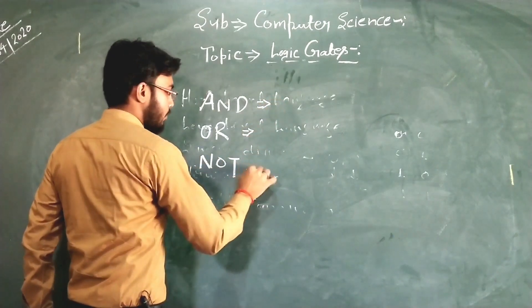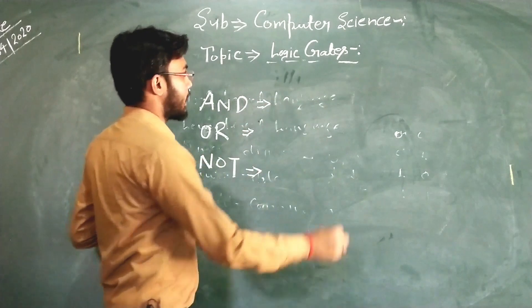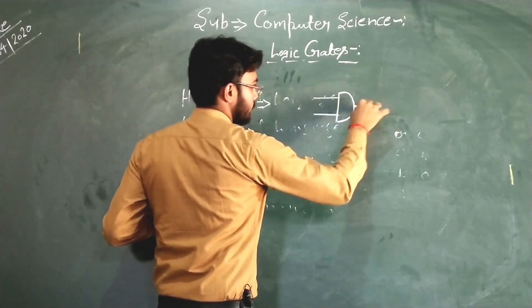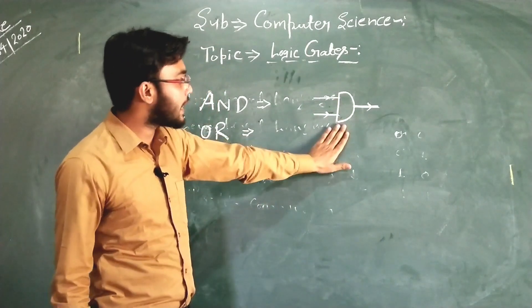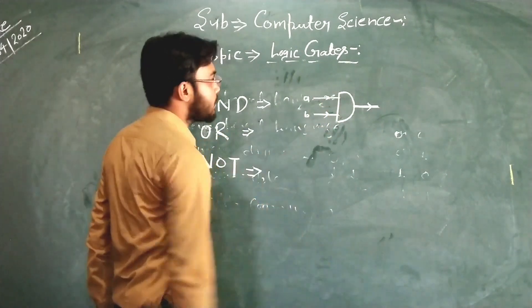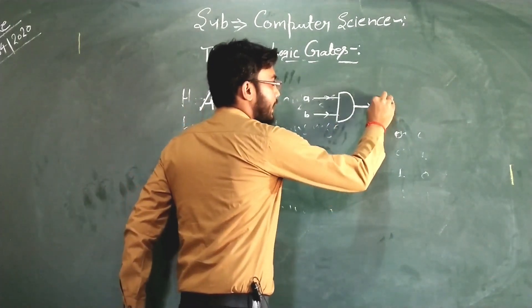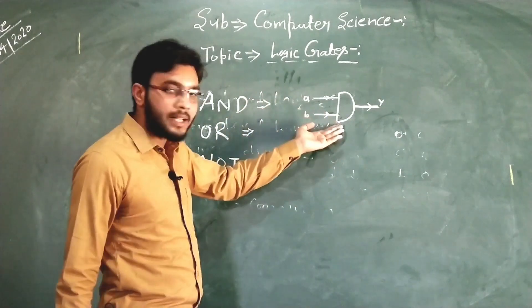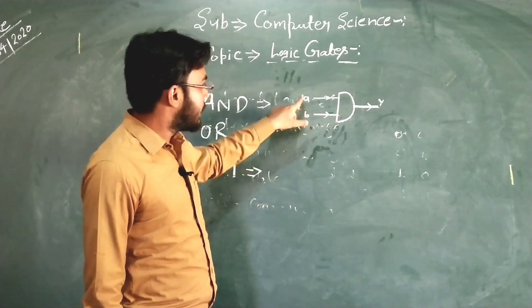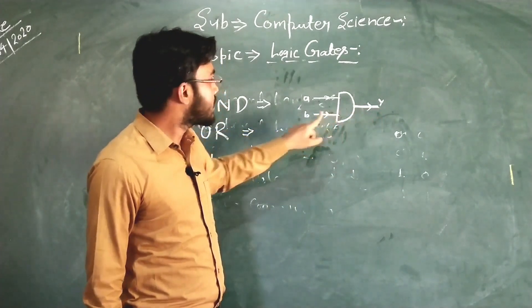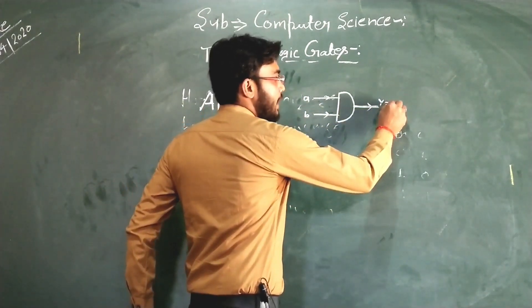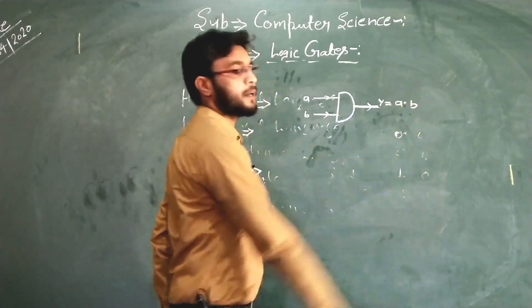Firstly, we will talk about the AND gate. The switch circuit for AND gate is called a schematic diagram. There are two inputs — suppose the first input is A and the second input is B — and the output is Y. The AND gate performs logical multiplication. There are two inputs and a single output, and the output is the multiplication of the given inputs, so the output is Y = A · B. The dot symbol represents the AND logic.